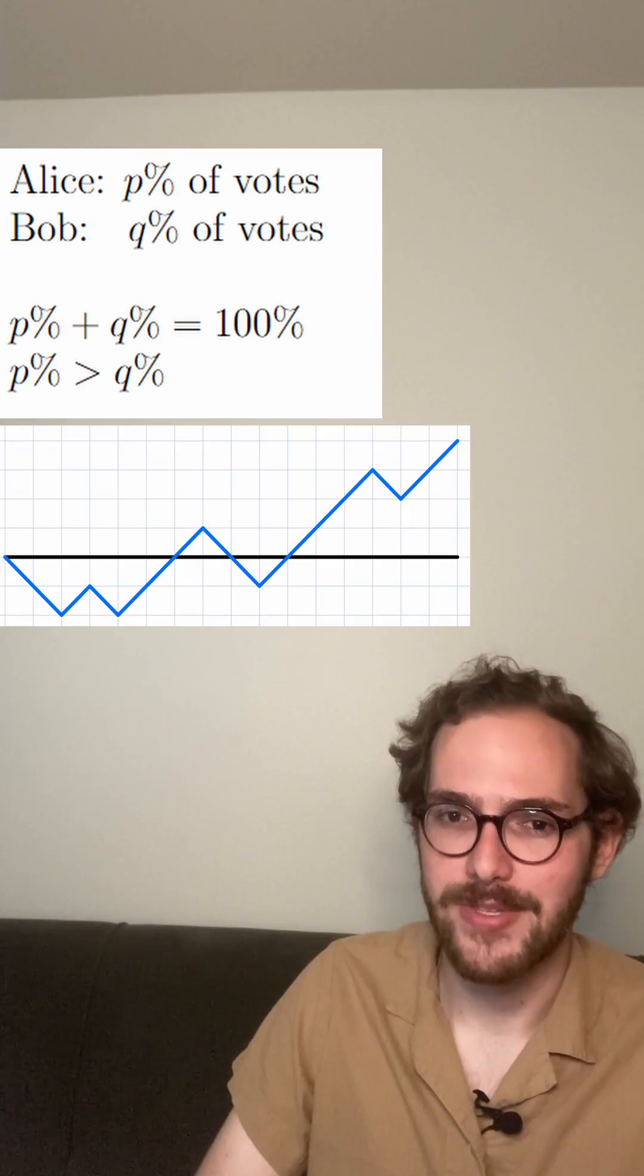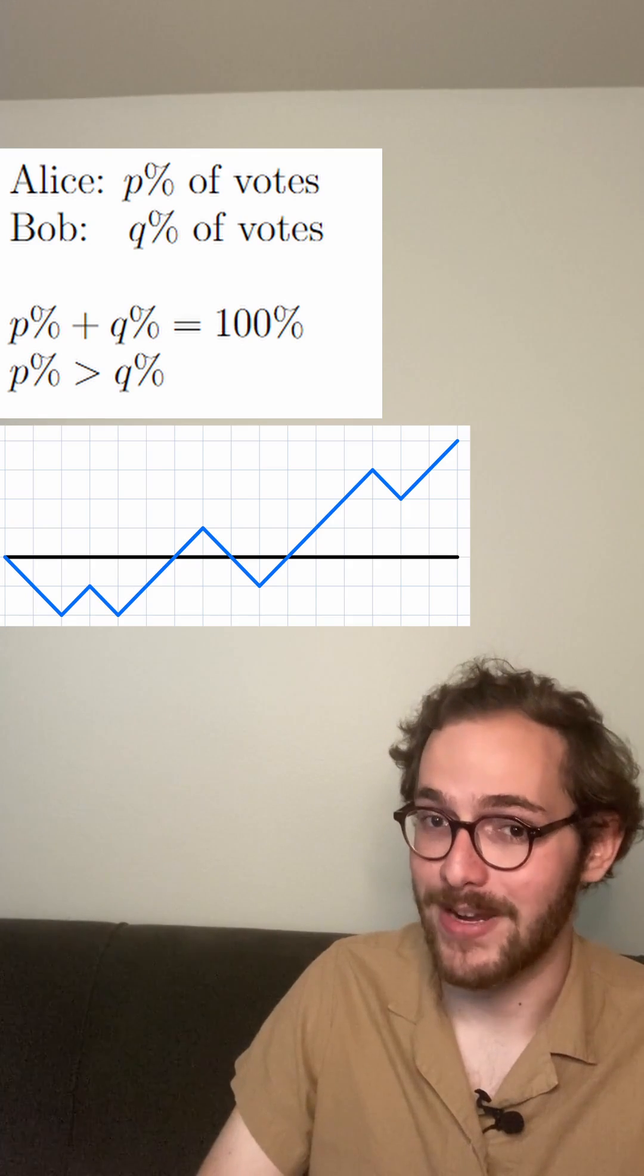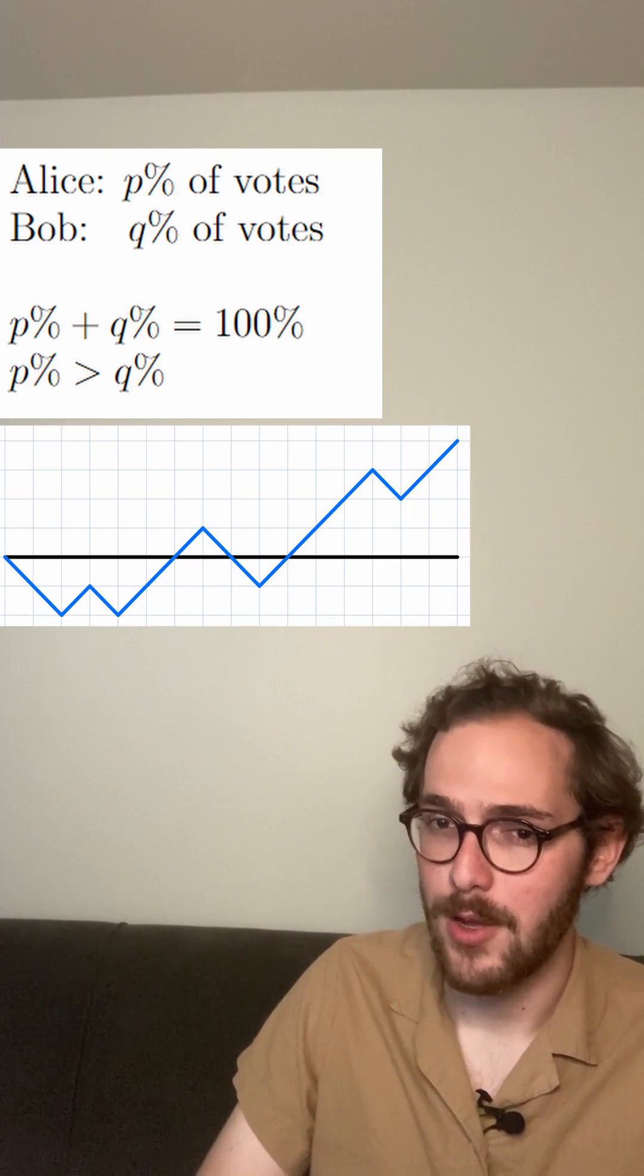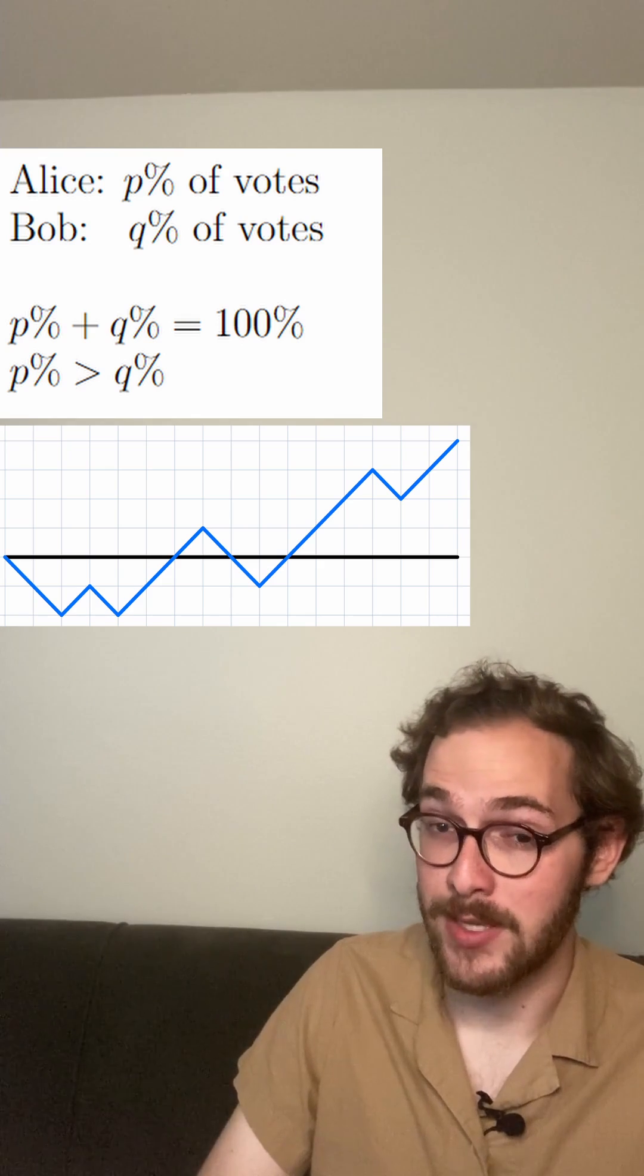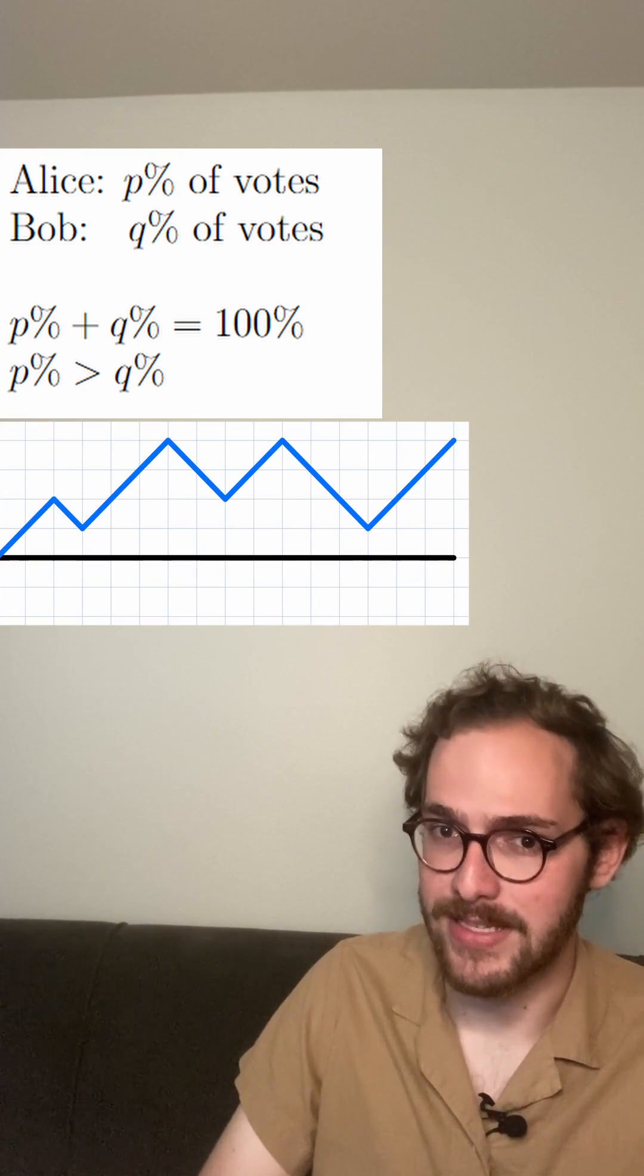That is, Alice wins. The votes come in a random order, and we keep a running tally of the vote counts. What are the odds that the running tally will have always said that Alice is ahead?